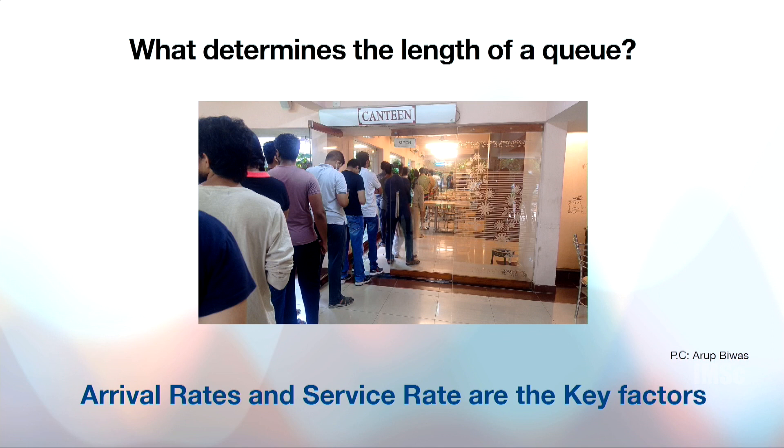Primarily, one would think that the arrival rate of the jobs and the service rate are the key factors. For example, in a supermarket, the arrival rate of customers and the service person at the cash counter are the key factors which determine the length of the queue. But are these the only two factors? Let us discuss that.